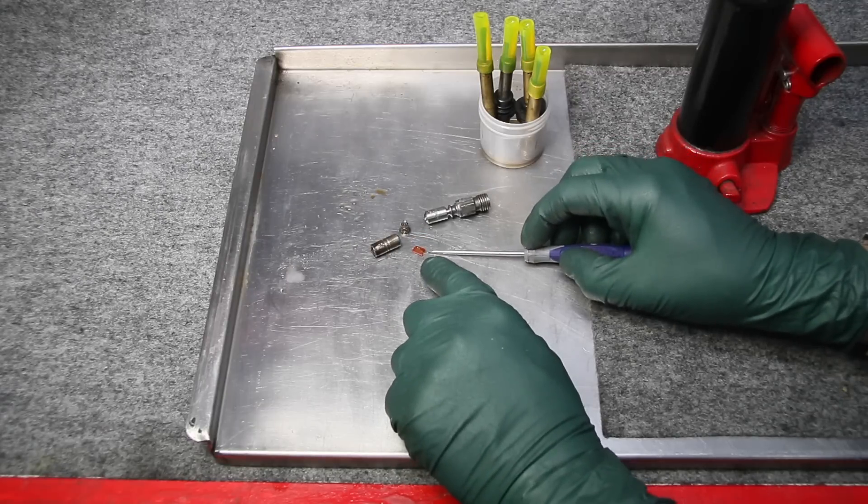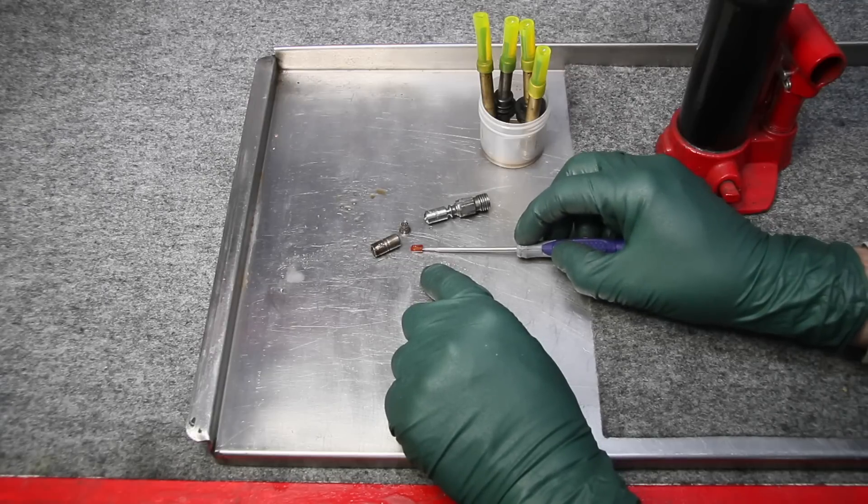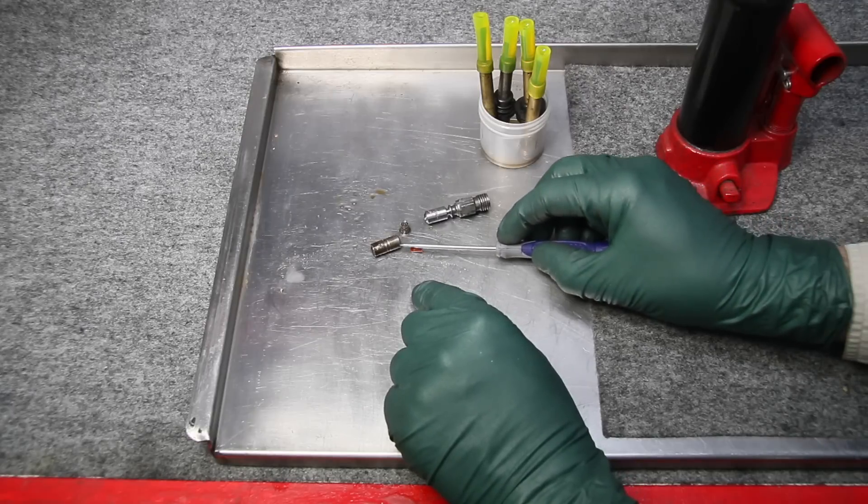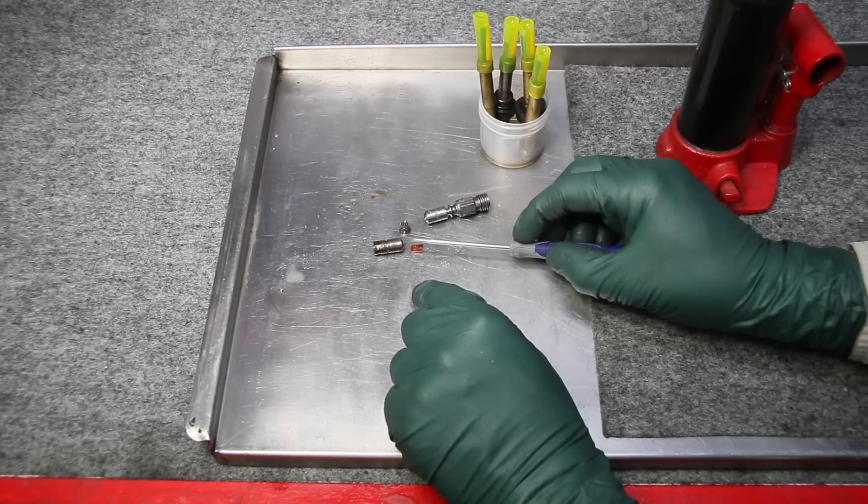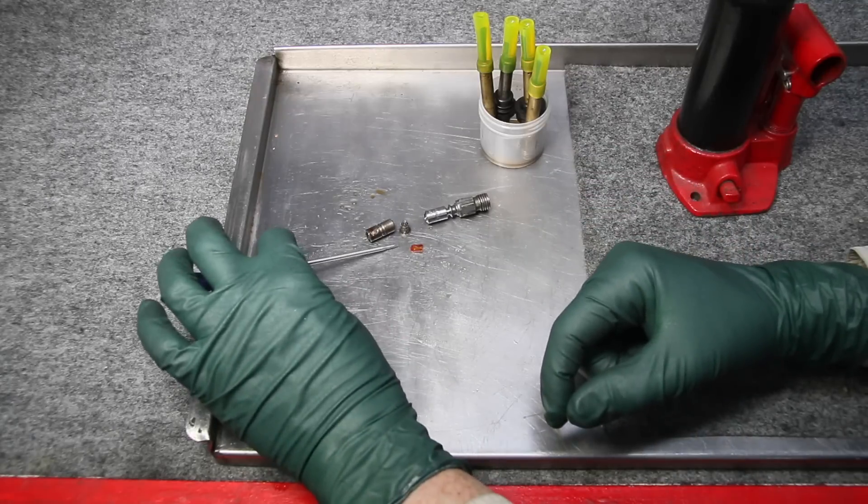So the idea is how are you going to clean the screen if all the junk is on this side and you're trying to force cleaner this way?